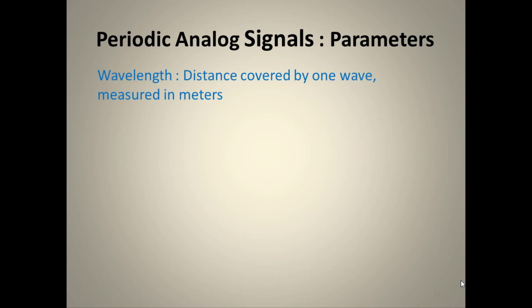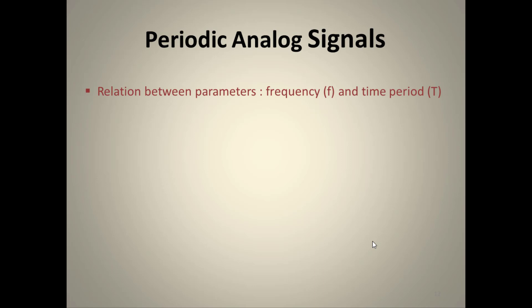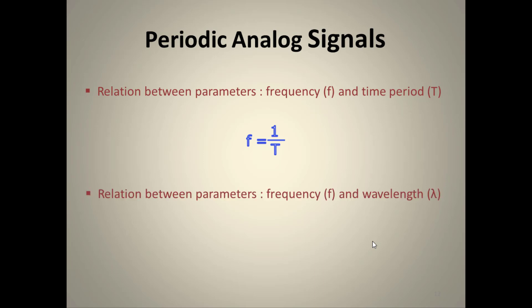Wavelength is the distance covered by one wave, measured in meters and denoted by lambda. One crest and one trough together make a single wave, and that distance is the wavelength. Time period T is the time required to complete one oscillation; frequency and time period are inversely proportional: f = 1/T. The relation between frequency and wavelength is f = c/λ, where c is the velocity of the wave.